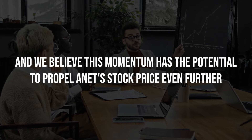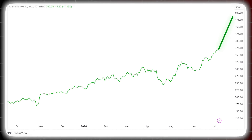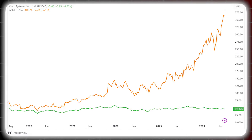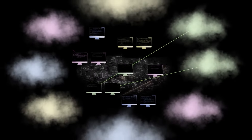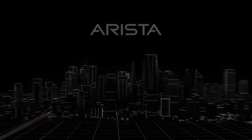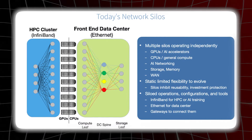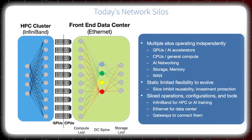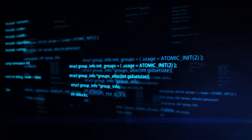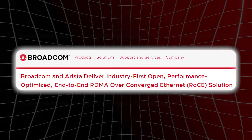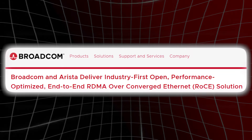This impressive rally suggests strong investor recognition of Arista's strategic position in the growing AI landscape, and we believe this momentum has the potential to propel ANET's stock price even further, with a possible breakout beyond the $500 mark. A key differentiator for Arista is its focus on scalability and reliability. Unlike competitors like Cisco, Arista's solutions are designed to seamlessly scale alongside the ever-growing demands of cloud computing providers — crucial for AI, where massive data sets and complex workloads require robust networking infrastructure. Arista also holds an advantage with its open Ethernet architecture and unified Arista EOS software, which contrasts with network silos created by traditional setups.